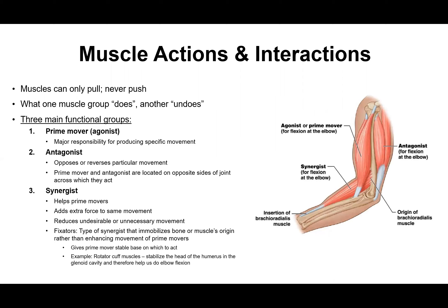We're going to start talking about muscles in the context that they can only pull — they can't actually push anything. Whenever we're performing a muscle action, our muscles contract, meaning they're shortening. That is consistent with the idea that they only pull. We're going to classify muscles based on their functional groups, because whatever one muscle does, the other one's going to undo. Back in the joint structure section, we talked about movements like flexion, extension, abduction, adduction, and so on — it's these muscles contracting across joints that allow us to perform those movements.